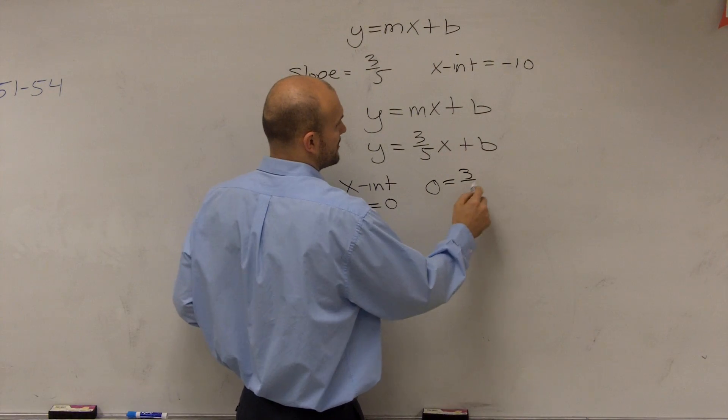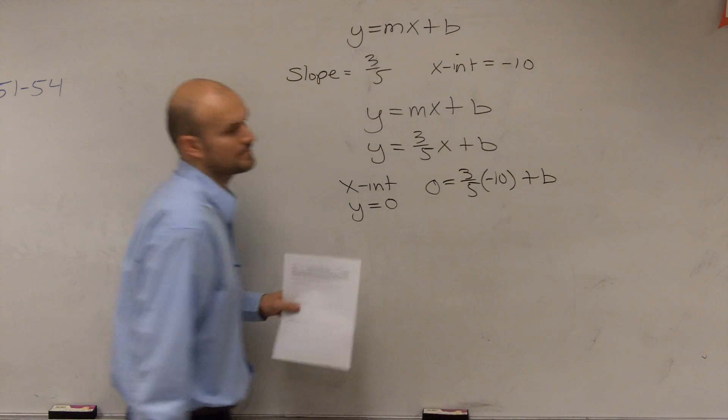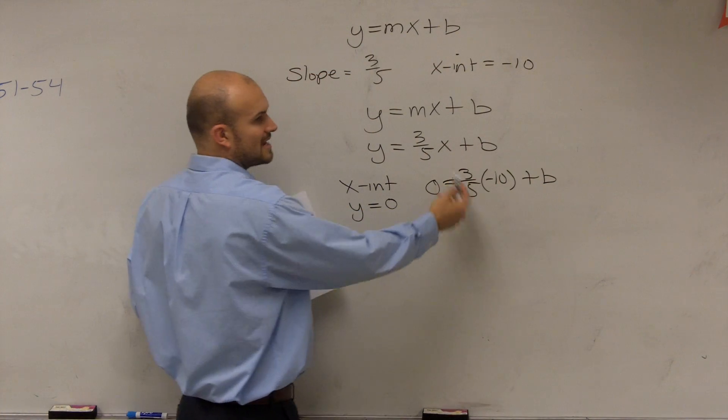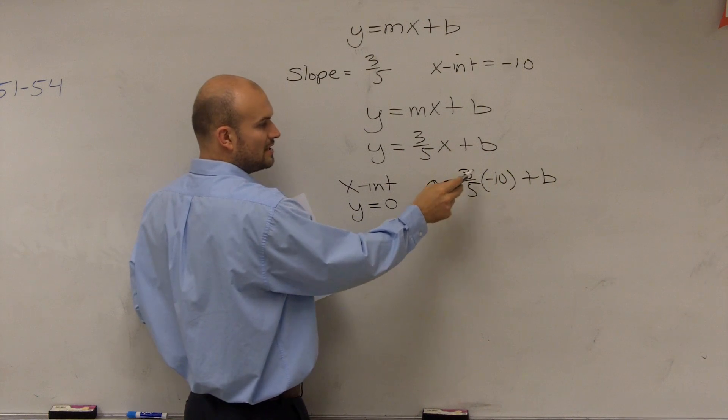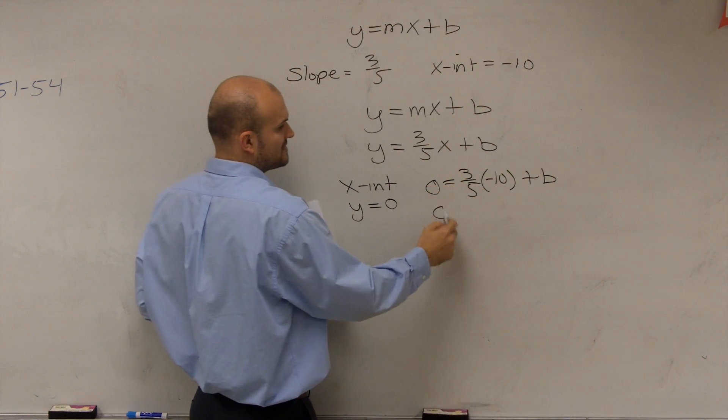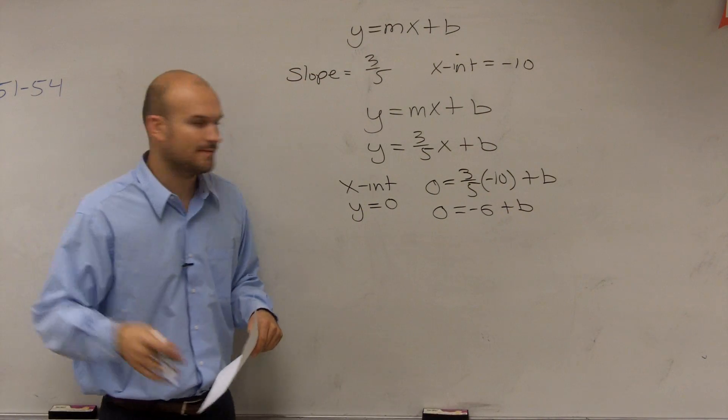0 equals 3 fifths times negative 10 plus b. Then you solve that. So 10 times 3 fifths, negative 10 times 3 is negative 30. Negative 30 divided by 5 is negative 6. We'll work through it.